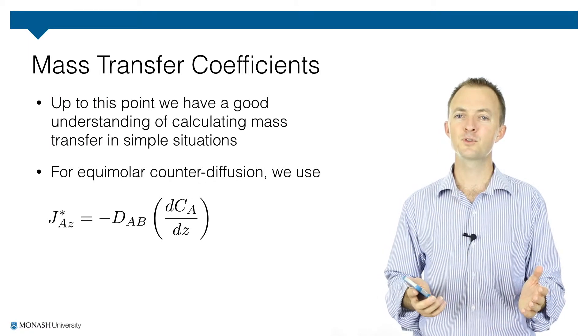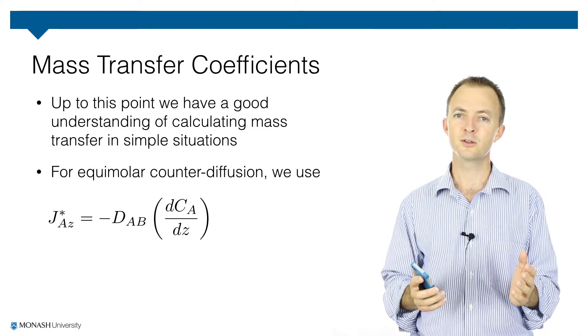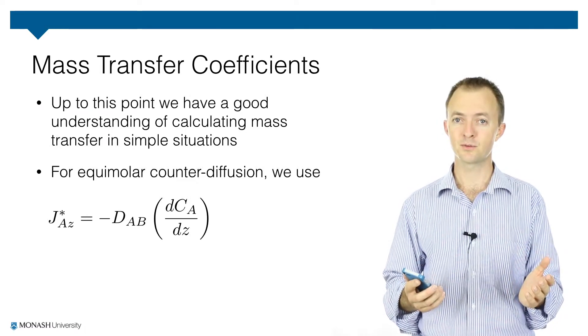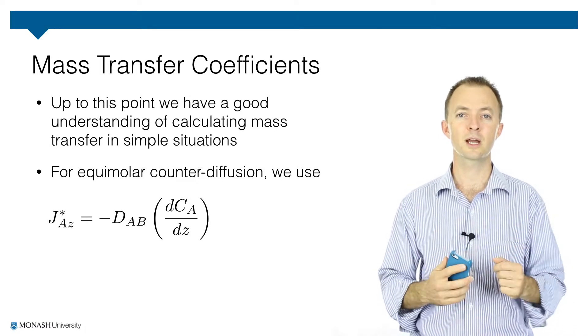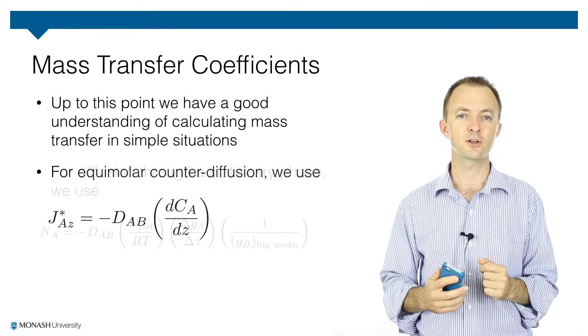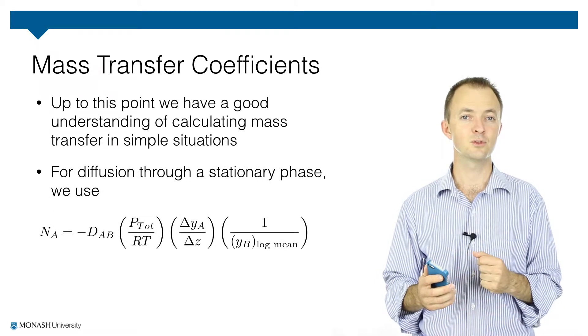So last week we talked about molecular diffusion, and we showed that we can describe molecular diffusion fairly well, especially for the case of equimolar counter diffusion, which is the pure simple case of diffusion. But also with the application of a log mean correction factor, we can describe diffusion through a stagnant non-diffusing phase B.